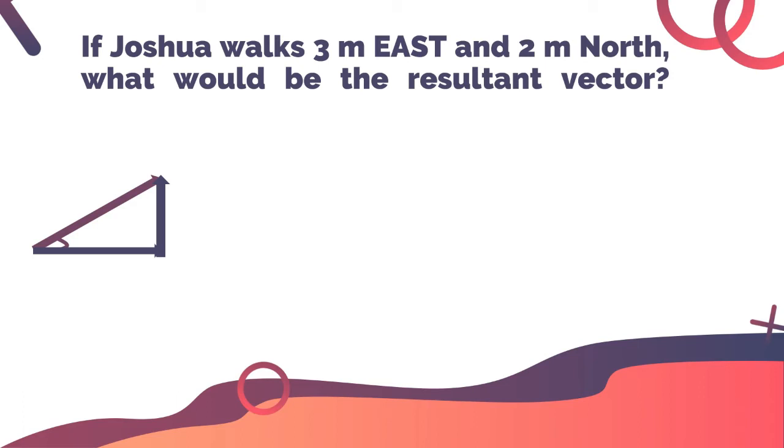Now let's proceed to the computation. The formula we will use to get the resultant vector is the Pythagorean theorem, which is c² = a² + b². Now let us substitute the values. So we have 3² + 2².